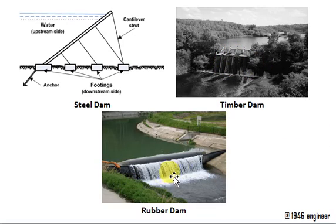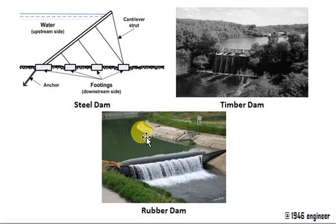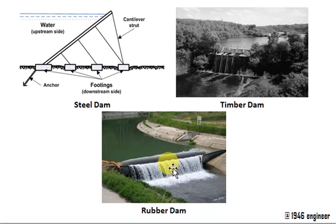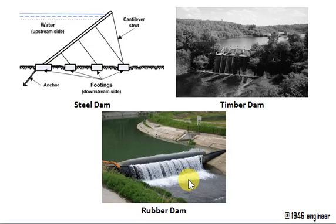The rubber dam is a new technique where you have a synthetic rubber material which is pressurized with water or air, which restricts water entering the downstream side. This is used in small scale, not large scale. These dams are very easy to construct and need very less time to construct, but there should be proper care in design and installation. So this is a new kind of technique.